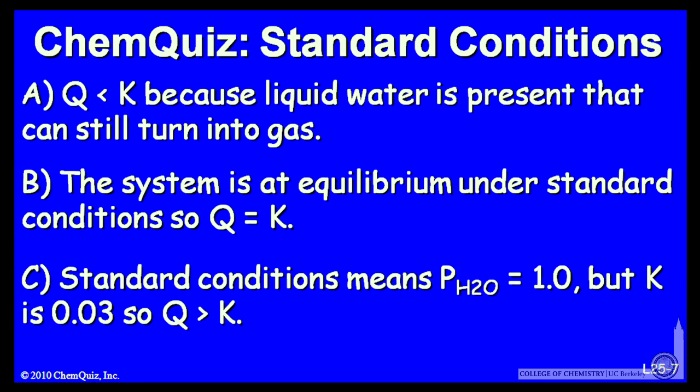B, the system is at equilibrium under standard conditions, and so Q is K. Or C, standard conditions means the pressure is 1 atmosphere, but K is 0.03, so Q is less than K. Think about those three possible explanations and make a selection.